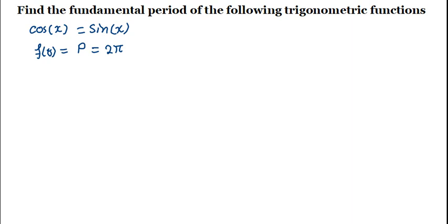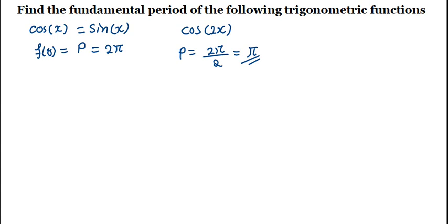Let's look at another example where, let's say, I give you cos 2x. What would be the period? The period p will be equals to 2 pi divided by the coefficient of x, which we named as a — that is going to be 2. This will be equals to pi. So it simply means the period of cos 2x is actually pi. This same method also applies to sine 2x. So we can see a kind of pattern there.